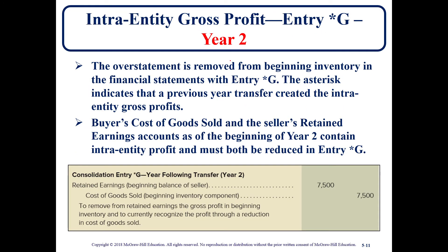In year two, we recognize the gross profit that was deferred in year one, assuming the inventory was sold to an outside party in year two. We use entry *G (star G). Since we're now recognizing this deferred gross profit, we decrease Cost of Goods Sold — which increases net income — and the $7,500 will be allocated to Retained Earnings.